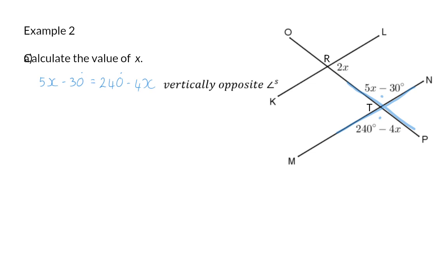If I now make use of some algebra to get all my variables on one side, I will add 4x on the left, and for the constants, I will add 30 degrees on the right. So 9x is equal to 270 degrees, which means that once I have divided both sides by 9, x is equal to 30 degrees.